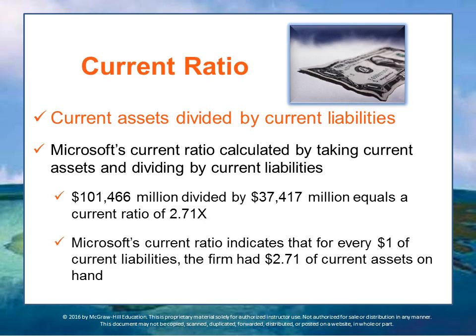The first liquidity ratio is the current ratio, calculated by dividing current assets by current liabilities. Microsoft's current ratio indicates that for every dollar of current liabilities, the firm has $2.71 of current assets on hand. Microsoft's current assets of $101 billion divided by current liabilities of $37 billion gives $2.71 times as many assets as liabilities.